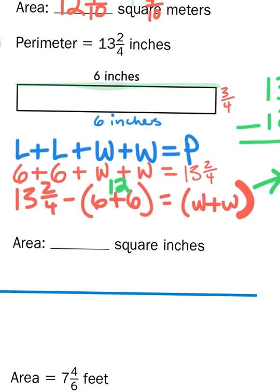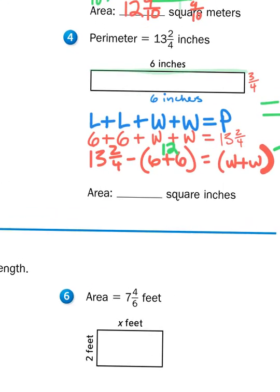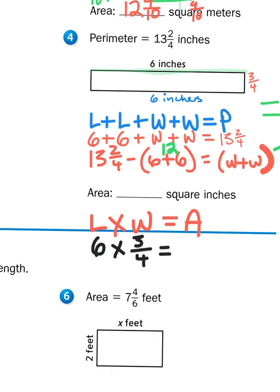After all that, to find the area of this problem, you'll do: length times width equals area. Multiply the length, which is 6 inches, times 3 fourths, and that will give you your answer. If you have questions, please reach out to your math teachers. Otherwise, we will talk again soon. Thanks.